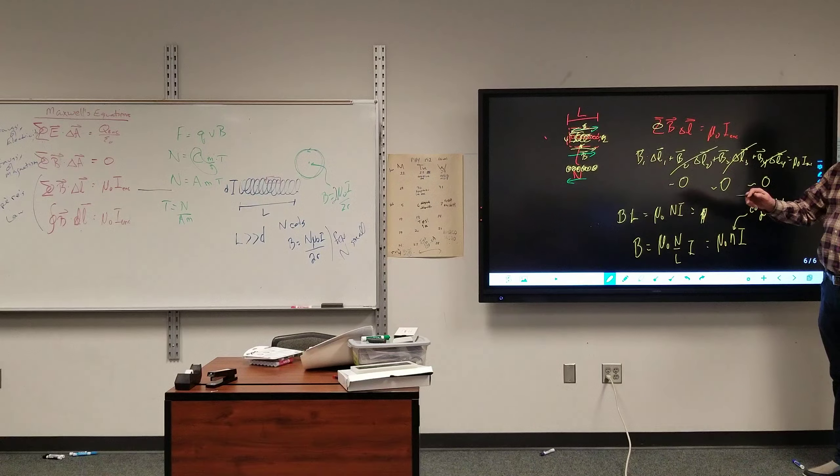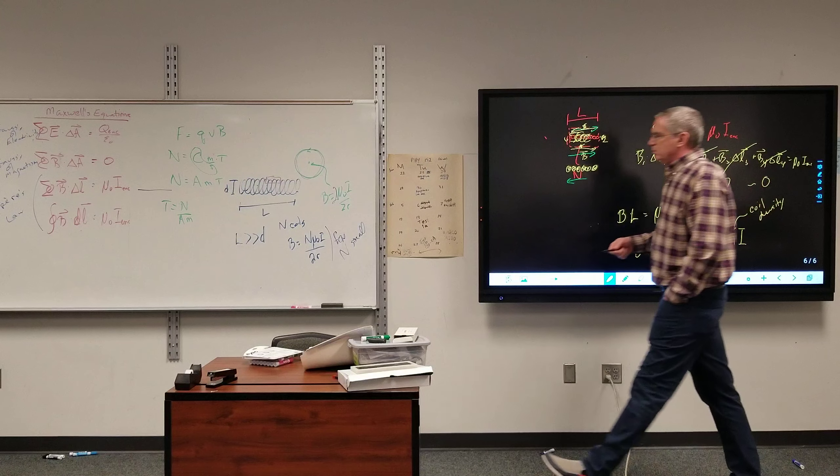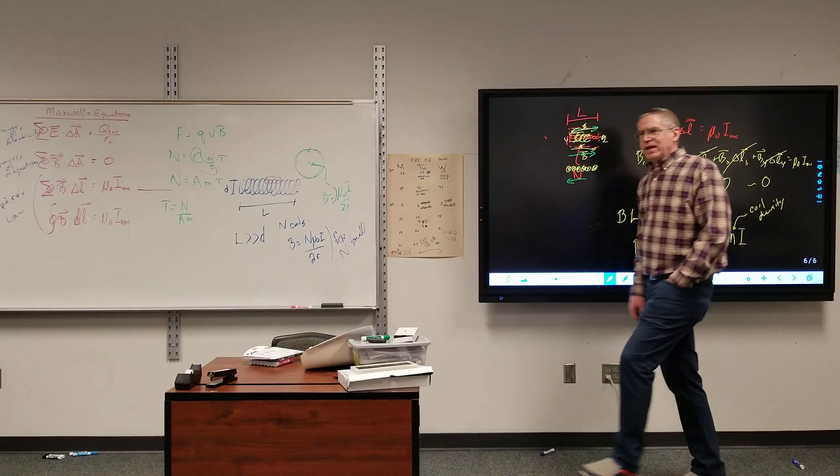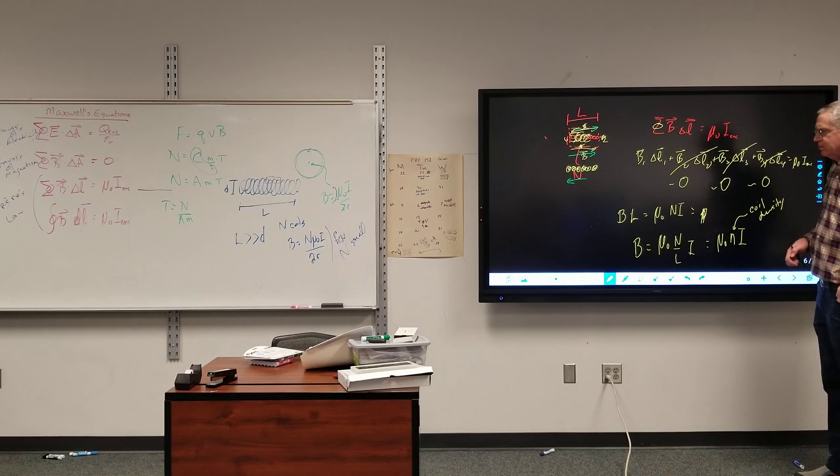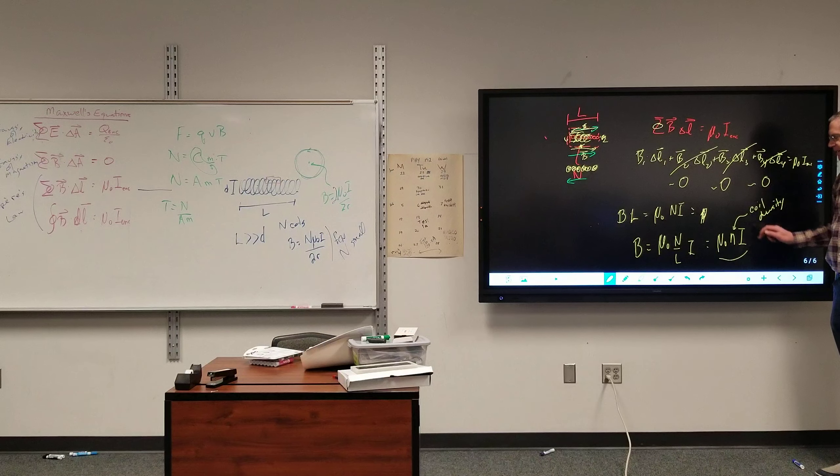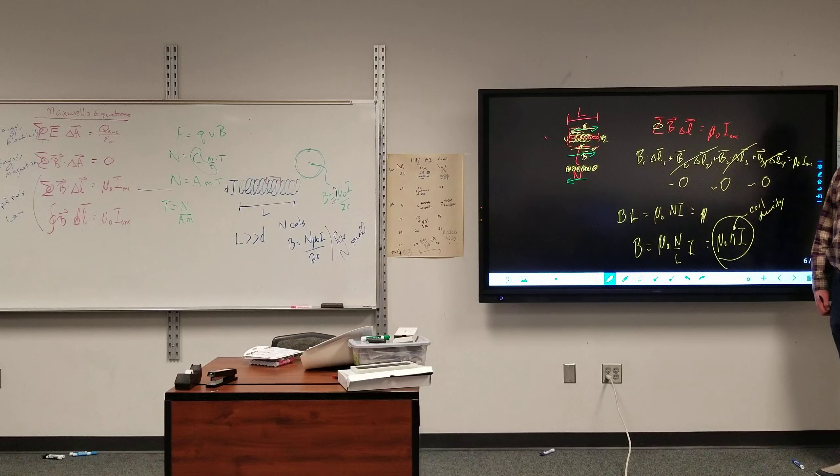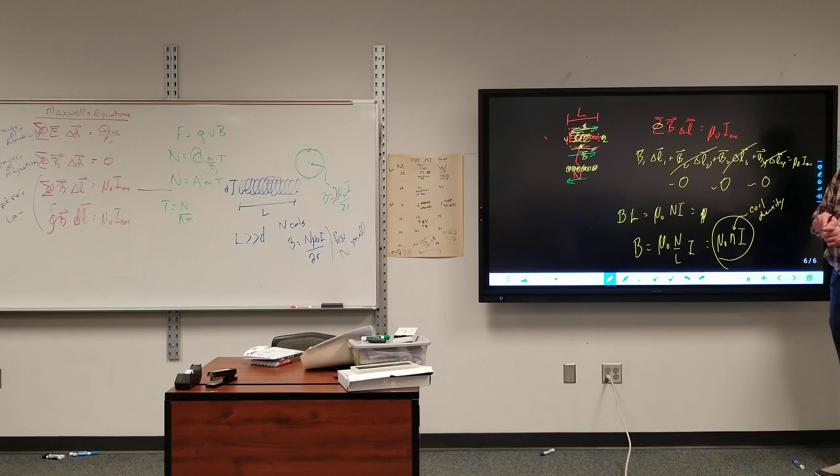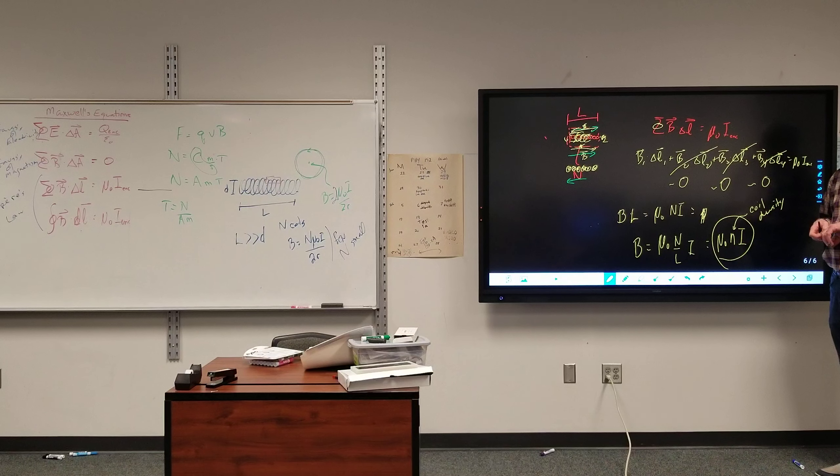So looking at these two, if I've got a few number of coils, I use this equation for the magnetic field. If I've got enough coils so that the length is significantly longer than the diameter, that's the magnetic field. And we'd be given coil density, or we'd have to measure that. Yeah, in the lab you will, you'll take a certain length, you'll measure how many coils there are. Yeah, it's fun.